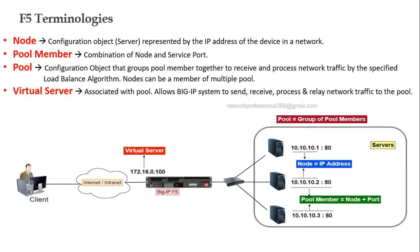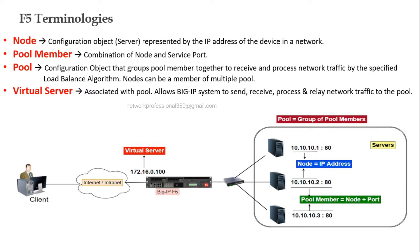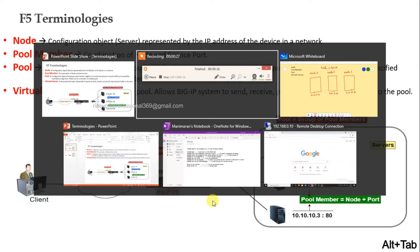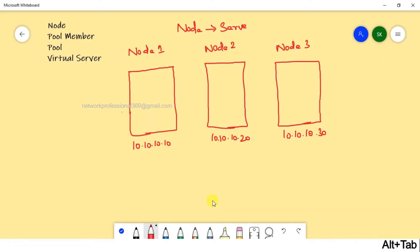Node, by definition, is the configuration object represented by the IP address of the device in the network. This means one server has a unique IP address. That's why we say Node — Node is the name of the server with its IP address.